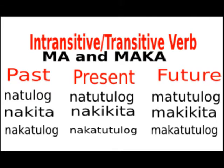Following are ways to form the derivatives of transitive and intransitive ma and maka verbs. For intransitive verbs using ma, example: tulog. Infinitive: matulog. Imperative: matulog. Past: natulog. Present: natutulog. Future: matutulog.